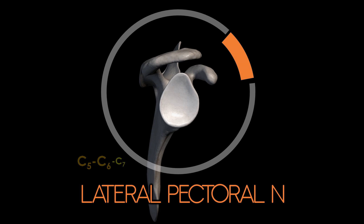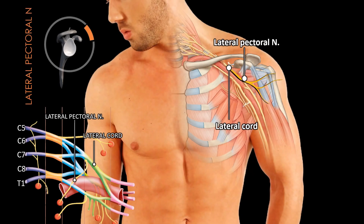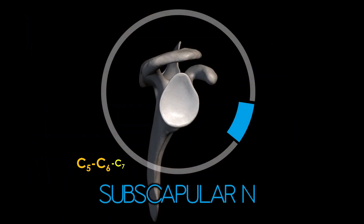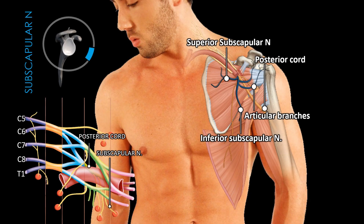The lateral pectoral nerve, once detached from the lateral cord, pierces the pectoral fascia to join the medial pectoral nerve and form the ansa pectoralis. Before doing so, it sends articular branches to the anterior surface of the glenohumeral and acromioclavicular joints. The subscapular nerve divides into two branches: the upper subscapular branch specifically innervates the subscapularis muscle, while the lower subscapular branch gives off small articular branches to innervate the anterior surface of the shoulder joint.